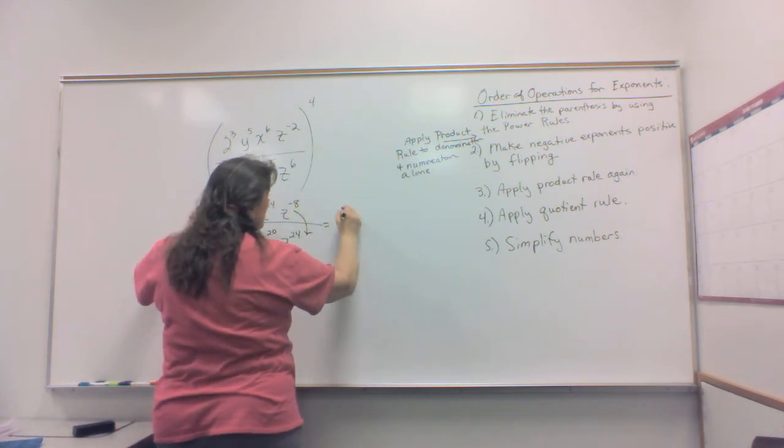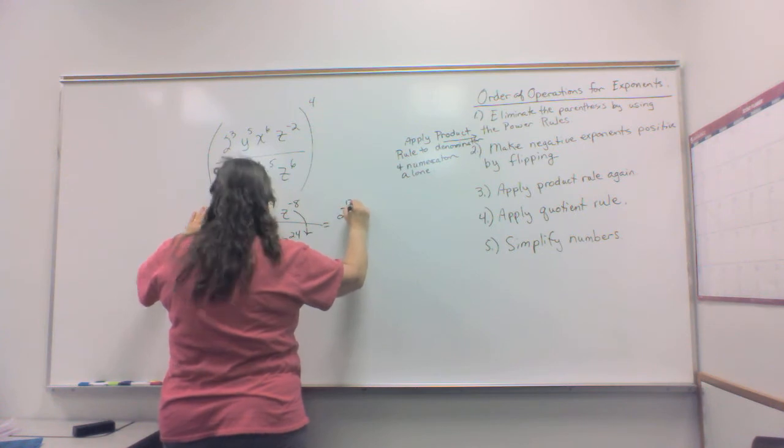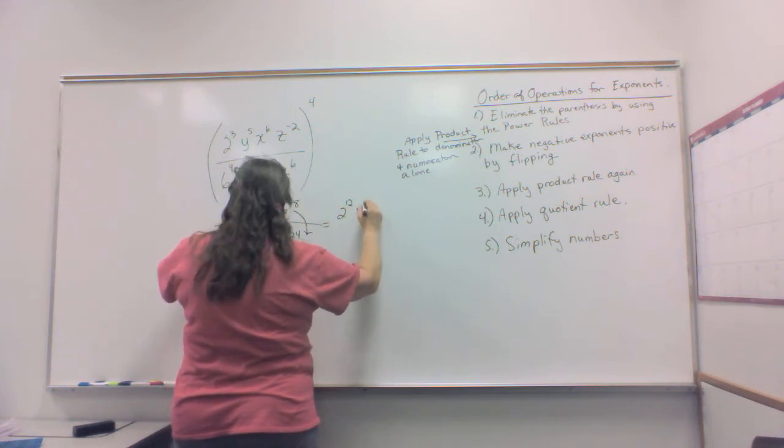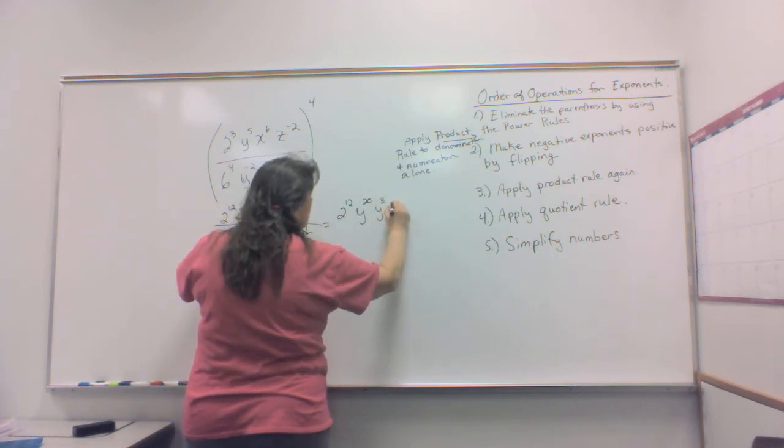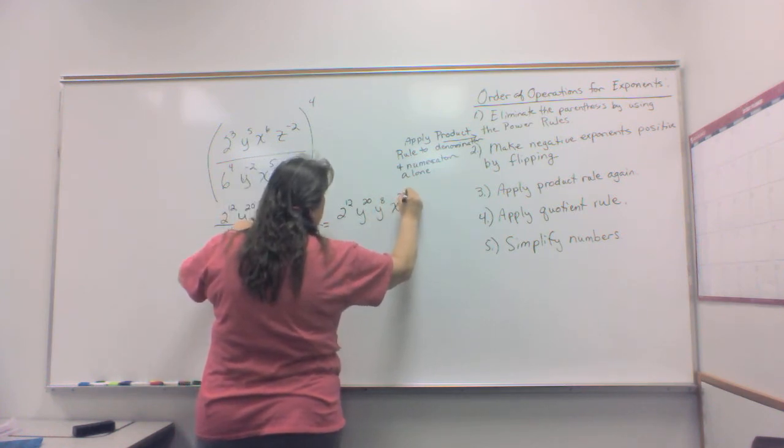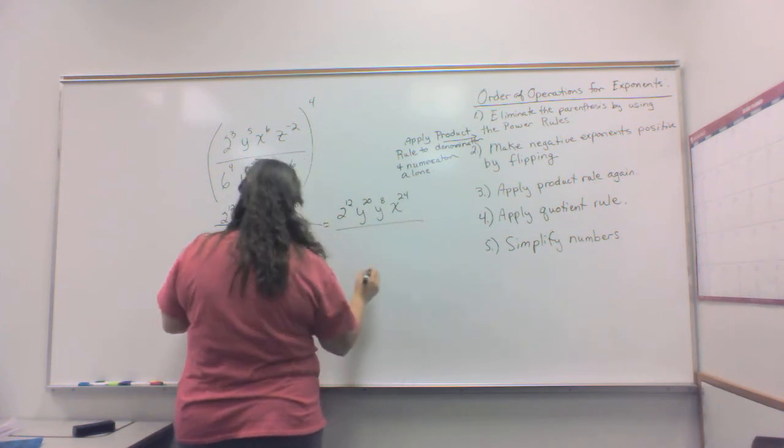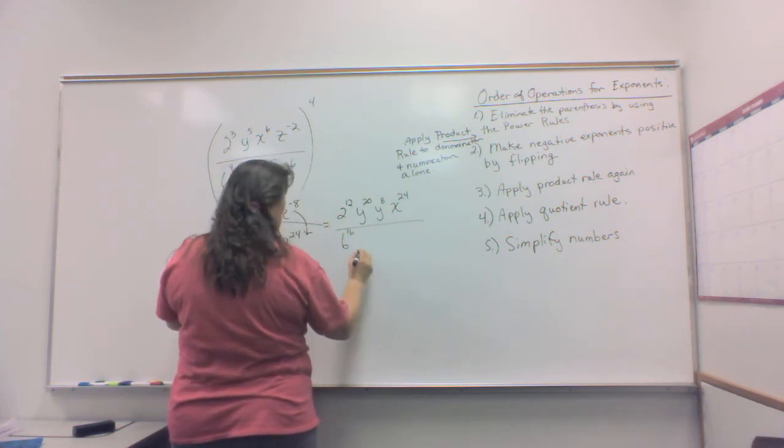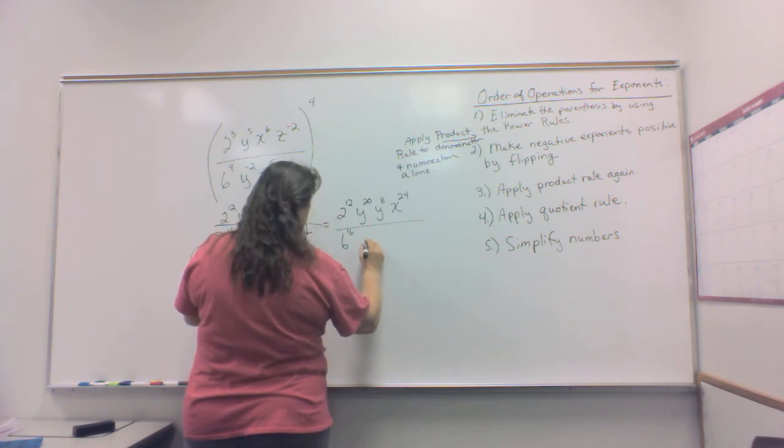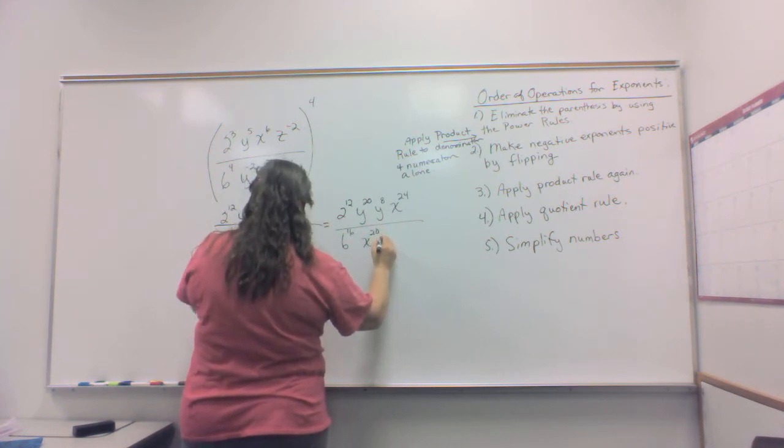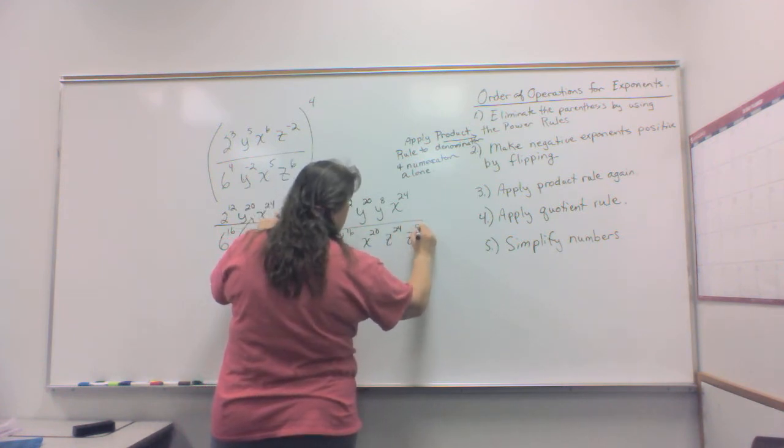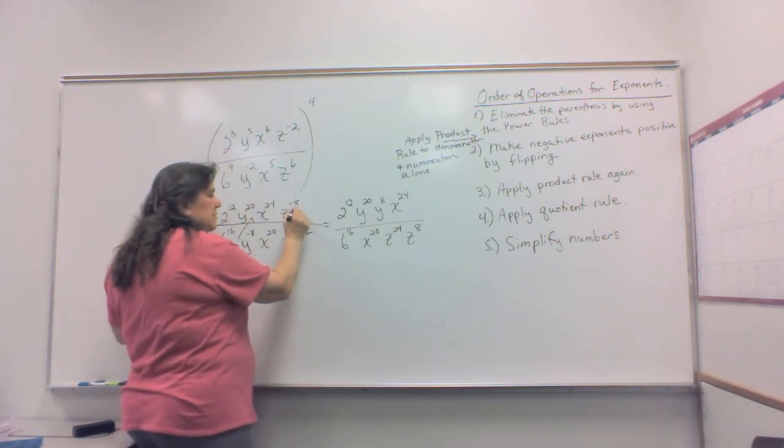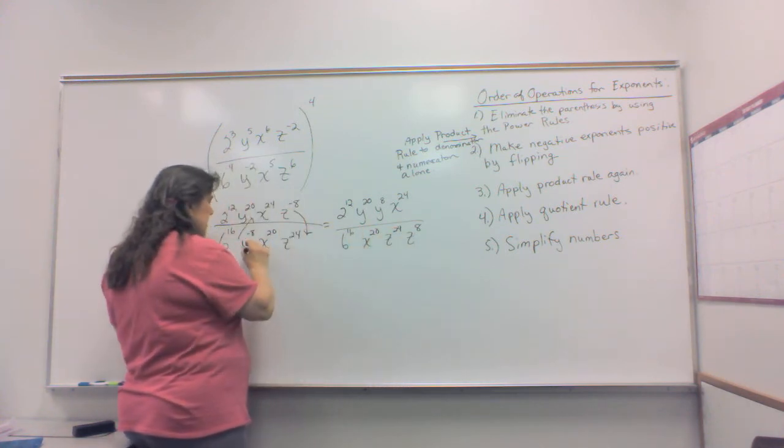So we're going to end up with two to the 12th times y to the 20th times z to the 8th times x to the 24th over six to the 16th and x to the 20th. And z to the 24th and z to the 8th. Notice how this one came down and this one went up.